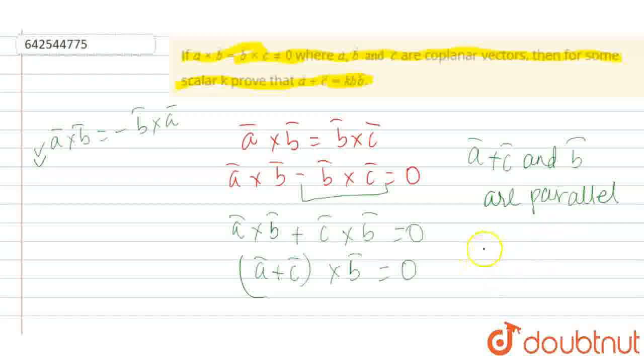If any two vectors are parallel, then the first vector is equal to k times, that is a scalar, times the second vector.